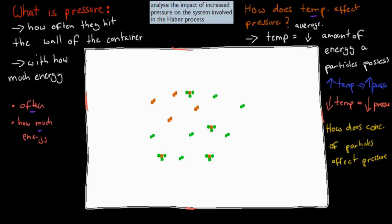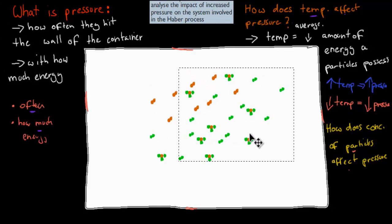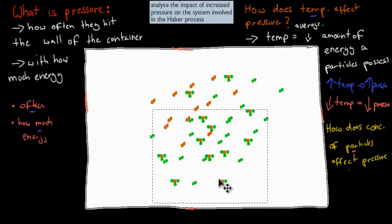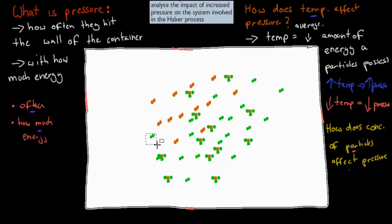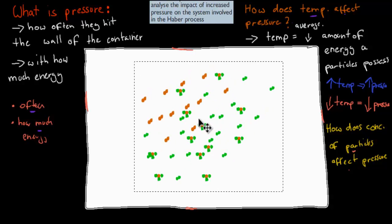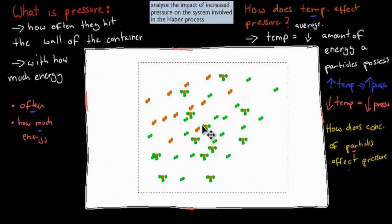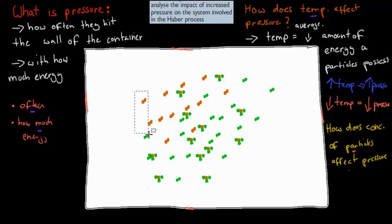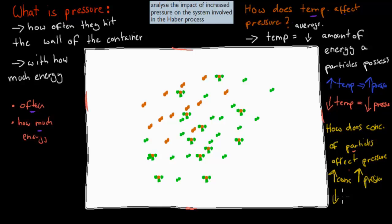How does the concentration of particles affect pressure? Let's say, for example, we were to double or even triple them — increase the concentration threefold. If just one particle hits maybe once or twice a second, but if there are so many more, that's going to happen for each and every one of them. So if you have more particles, they're generally going to hit more often. The more particles we have, the more pressure there is. So by increasing the concentration of particles inside a container, we get an increase in pressure. A decrease in concentration means a decrease in pressure, because if we have less stuff in there, less stuff is going to hit the actual wall.